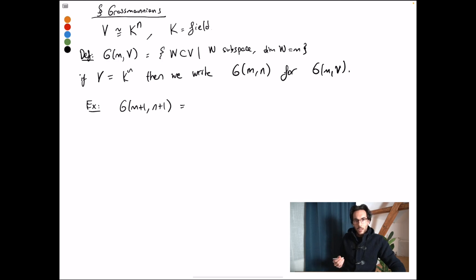The Grassmannian of m-plus-one-dimensional subspaces in an n-plus-one-dimensional space will be the space of m-planes in P^n, or it will be identified with them.